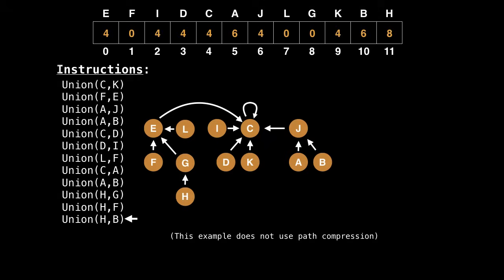And note that in this example, I'm not using a technique called path compression. This is something we're going to look at in the next video, which is an optimization on the union find.